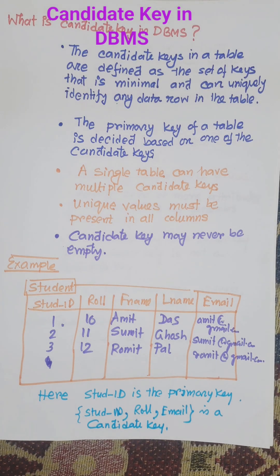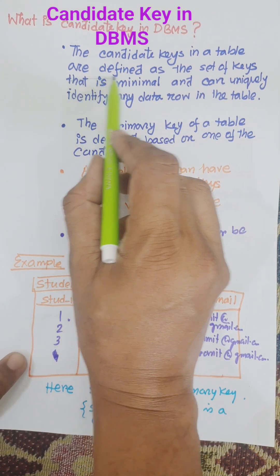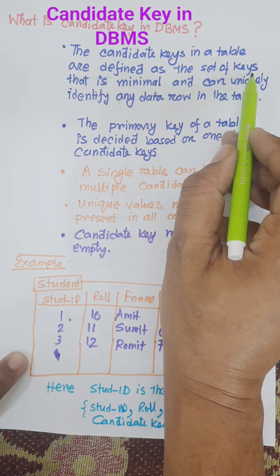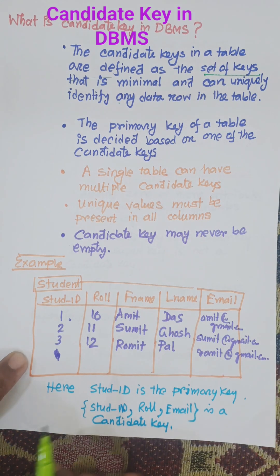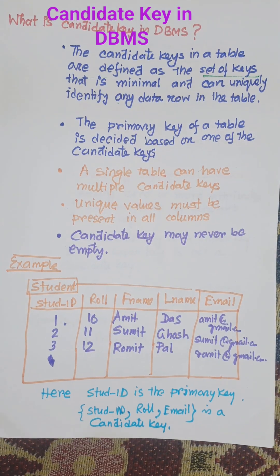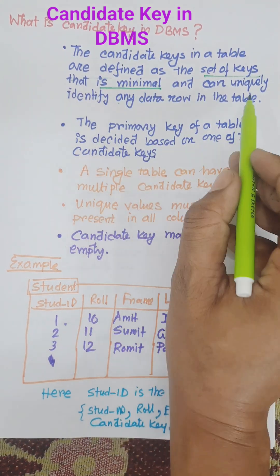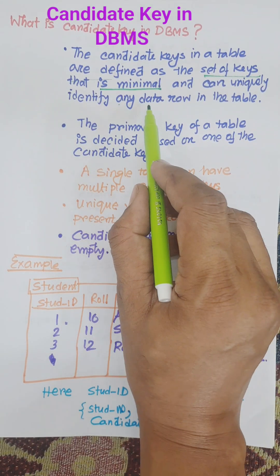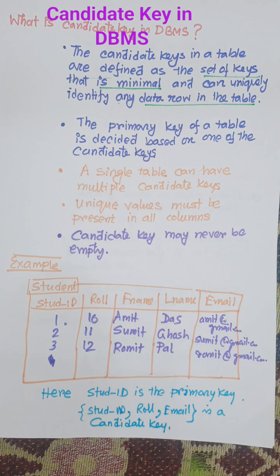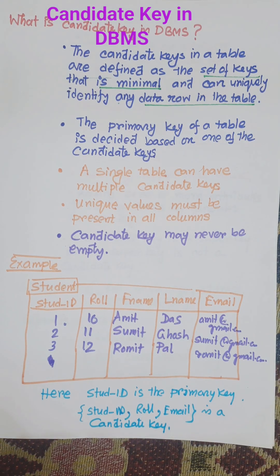In this video I am going to discuss candidate key in DBMS. The candidate key in a table is defined as the set of keys that is minimal — this is the important thing, that it is minimal — and can uniquely identify any data row in the table.